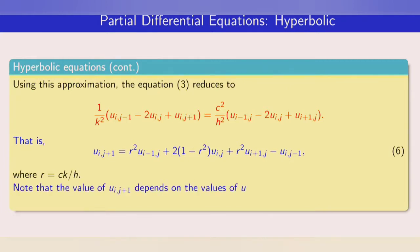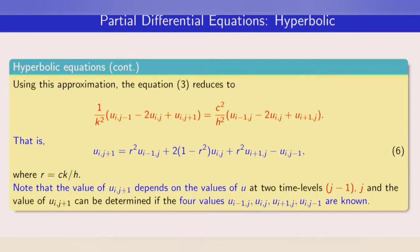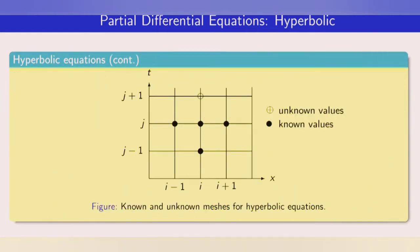The value of u(i, j+1) depends on values of u at two time levels: j−1 and j. Specifically, u(i, j+1) can be determined if the four values u(i−1, j), u(i, j), u(i+1, j), and u(i, j−1) are known. The three mesh values along the j row are at the same time level, and another mesh value is at time level j−1. This is the graphical (stencil) representation of known and unknown mesh points for the hyperbolic equation.